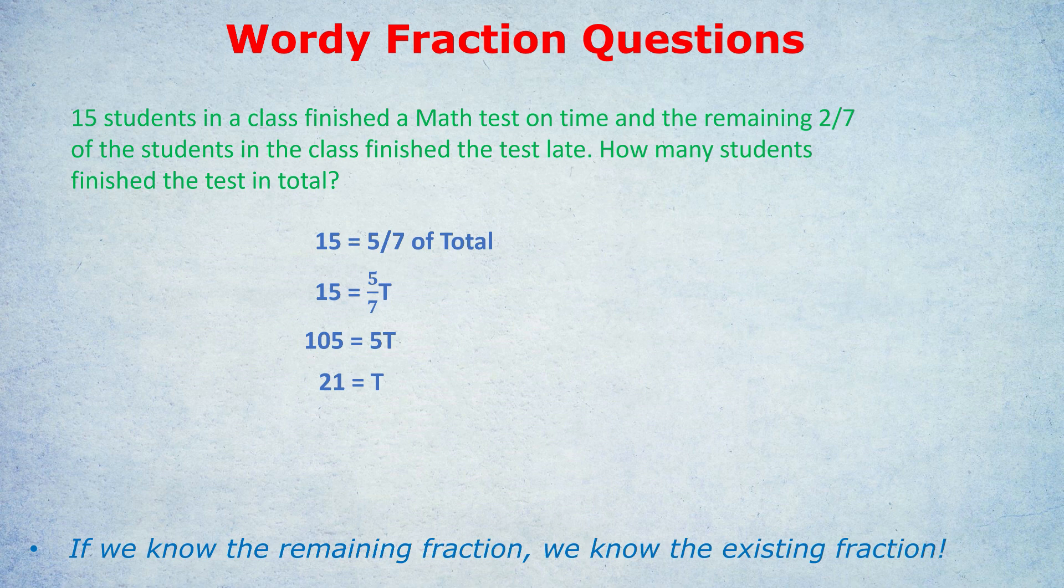There must have been 21 students in total. That's 15 that finished it on time, and two-sevenths of 21, which is six, who finished it late. So the math checks out. As I say, before we move on to the next example, the key thing you have to remember is making an equation between the amount they give you and the fraction that that amount represents.